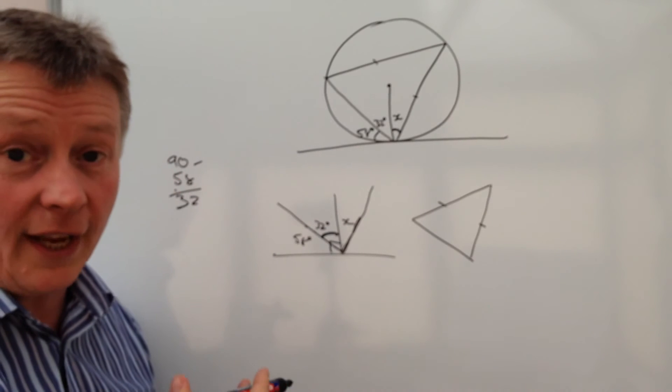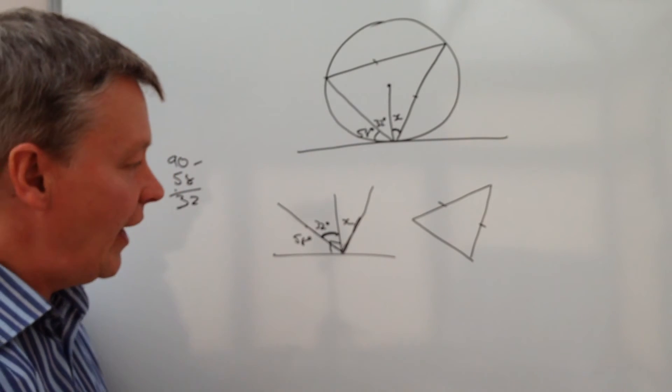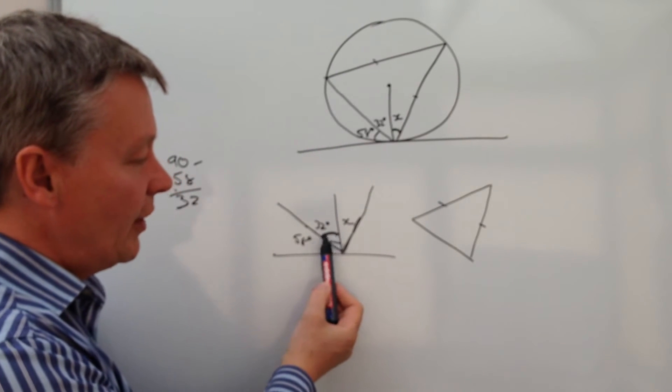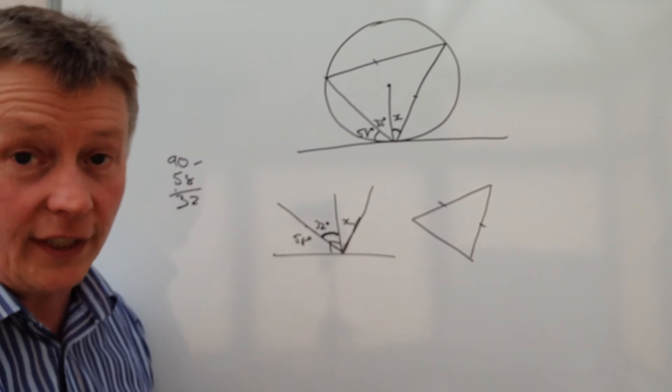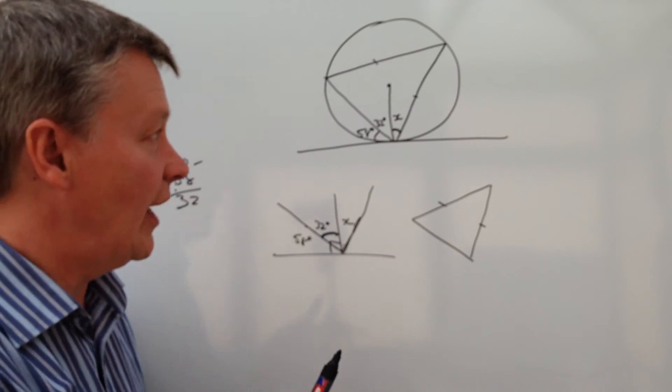Which means that there must be a way of working out what this corner angle is. And this corner angle actually is this bit here, which is this piece here. Now if we can get that, it will allow us then to work out the value of X. Because we know a bit of it, we know 32, and 32 from whatever that angle is will give us the value of X.